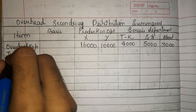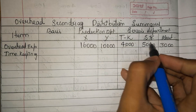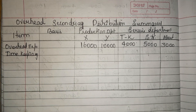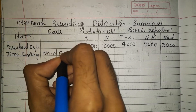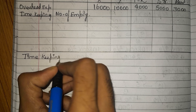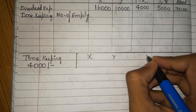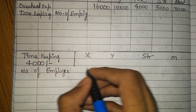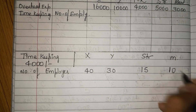First, let us take the timekeeping department. We need to divide its cost to X, Y, stores, and maintenance departments. Timekeeping keeps track of employee attendance, so the basis of division is number of employees. Total timekeeping expenses are 4,000. X department has 40 employees, Y has 30, stores has 15, and maintenance has 10 employees.